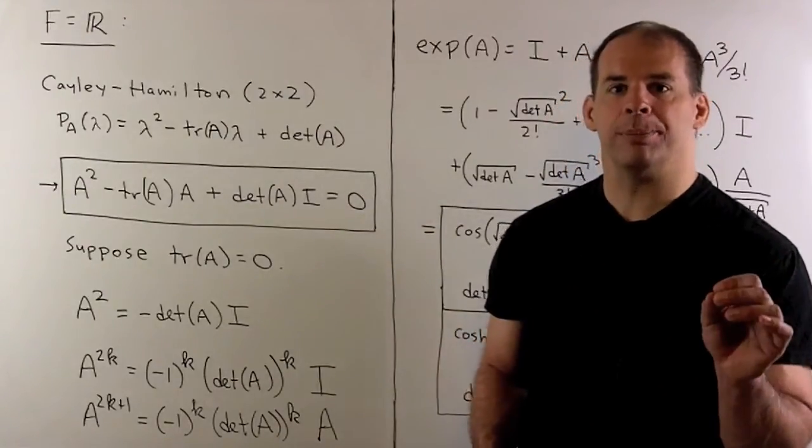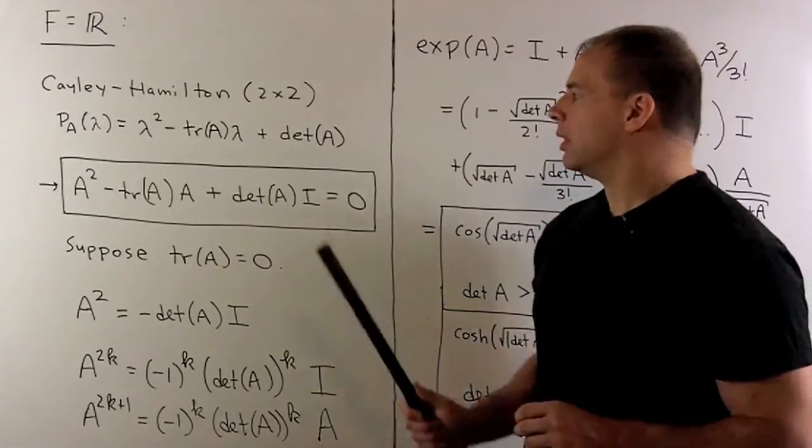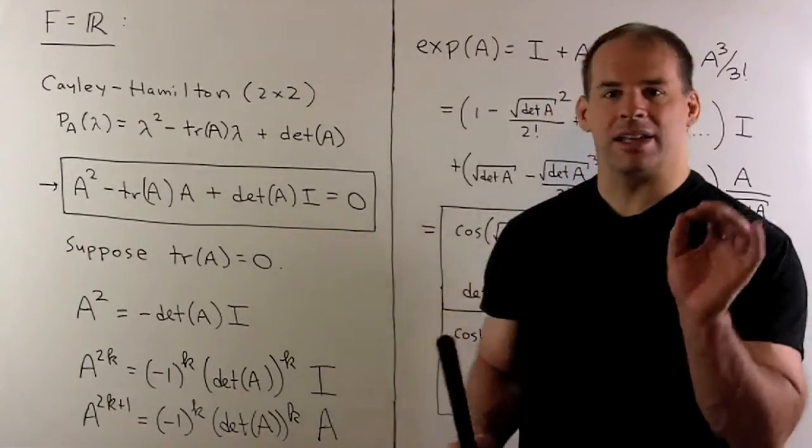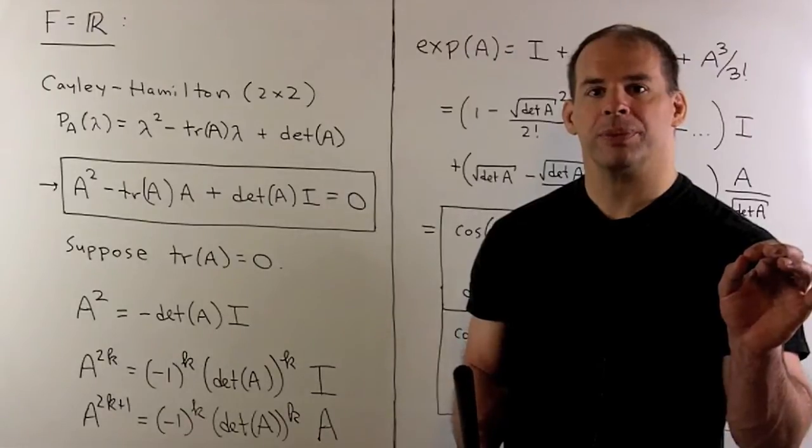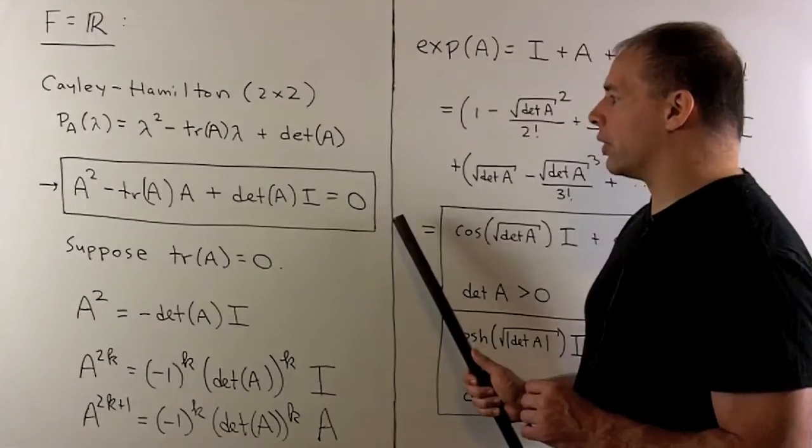If we apply Cayley-Hamilton, we're going to take lambda, replace it with A, and multiply the determinant of A times the identity matrix. Cayley-Hamilton says that this polynomial in A is always going to be equal to zero.